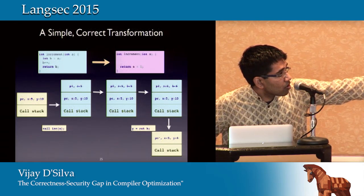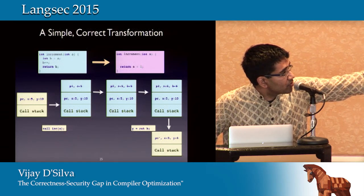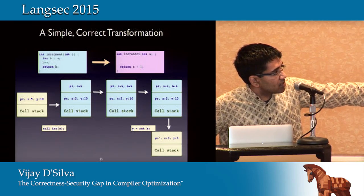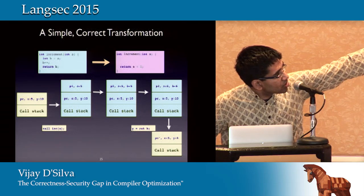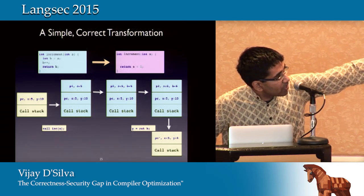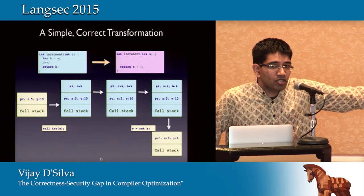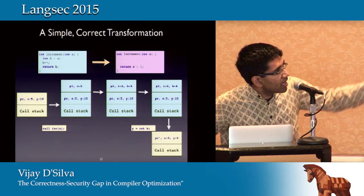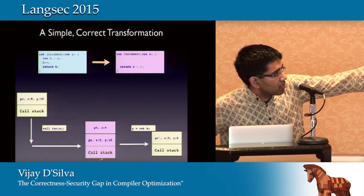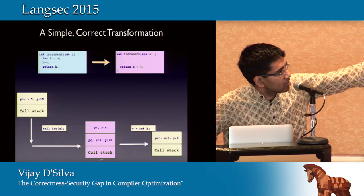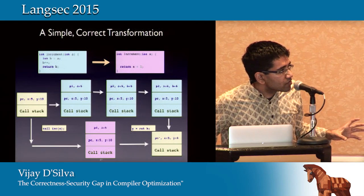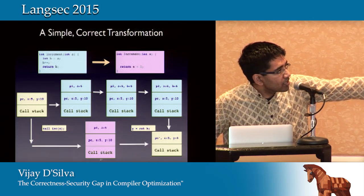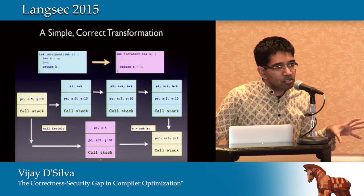The main observation is that correctness proofs rely on some notion of preserving the behavior of the program, and behavior is defined with respect to a notion of execution. Here's a simple optimization where you replace a redundant variable and just return the result of incrementing a variable. You have a calling context with a call stack, a program counter, a variable x equal to 5 and y equal to 10. When you call increment of x, you push something on the call stack, increment, and return. The essence of these proofs is that it doesn't matter what intermediate states you went through — you begin and end in the same state. This is the essence of a compiler correctness argument: two different paths — unoptimized and optimized — give the same result.